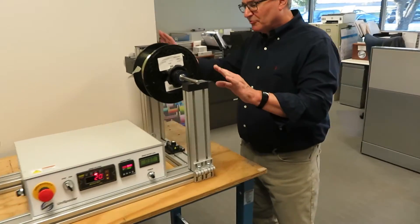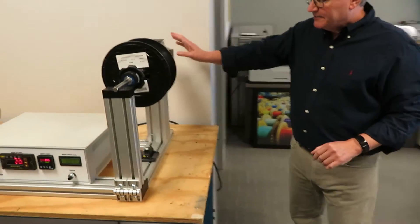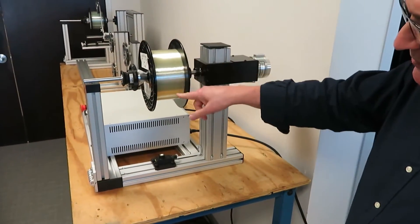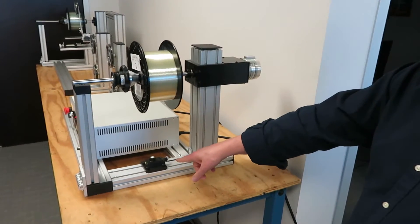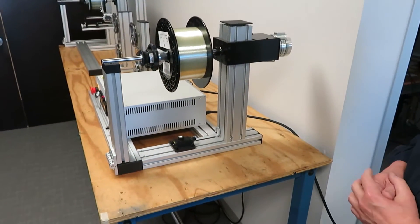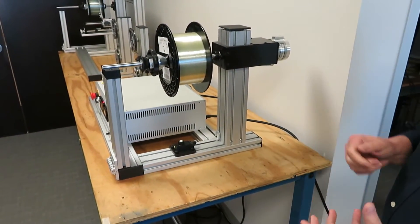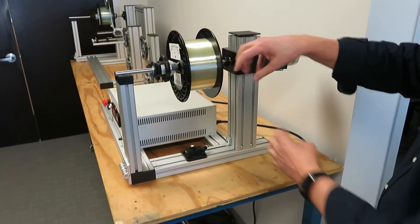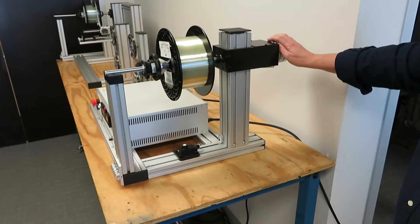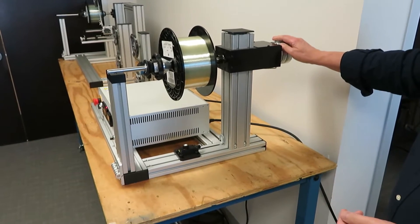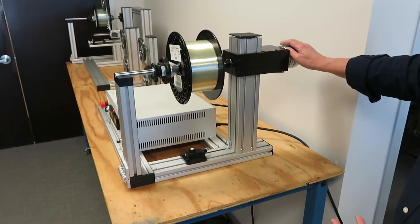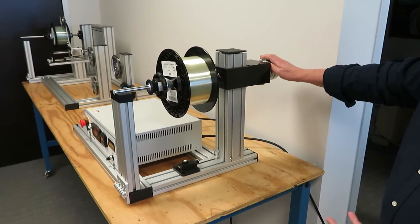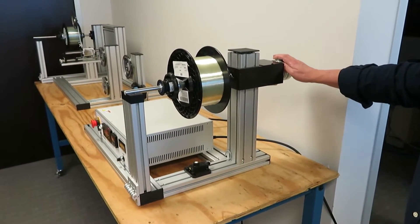We also have a closed-loop electronic brake on here where we're monitoring the diameter change of the payoff spool with an ultrasonic sensor below it that constantly monitors the diameter change. And as that spool gets smaller, it will lower the amount of current going to the brake to reduce the amount of torque generated by the brake with the goal of maintaining constant tension. It does a pretty good job of that.